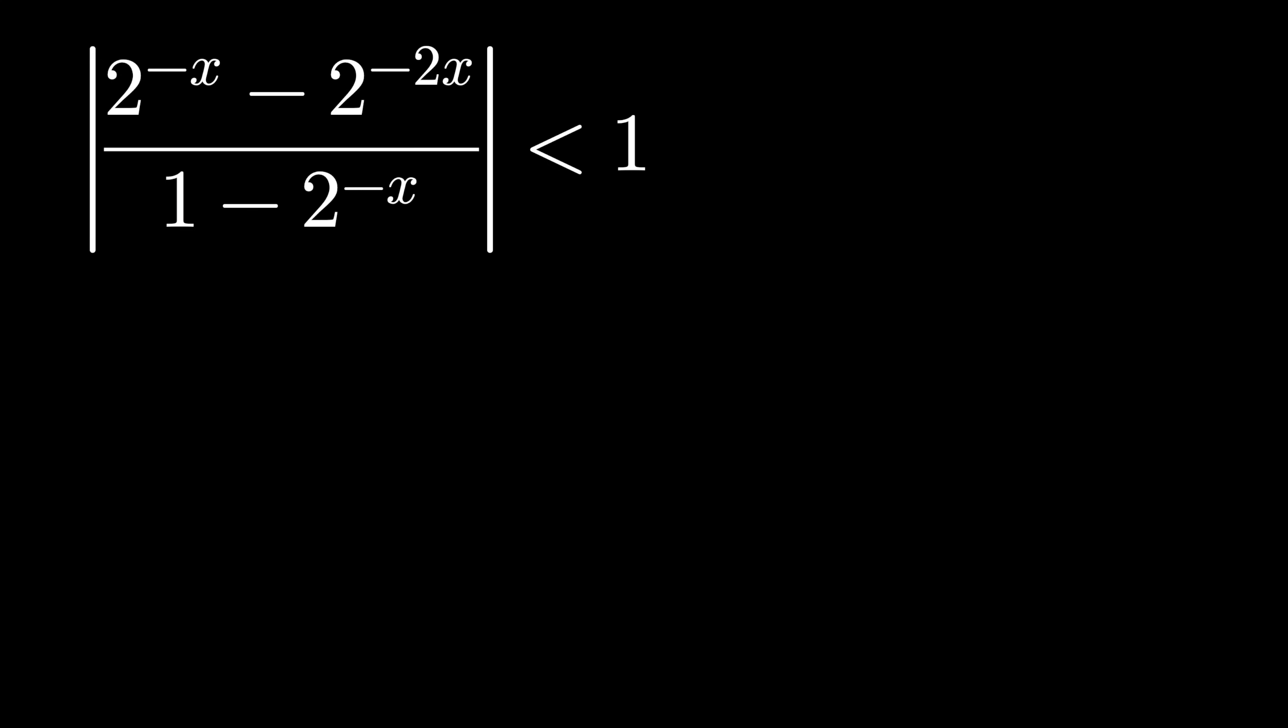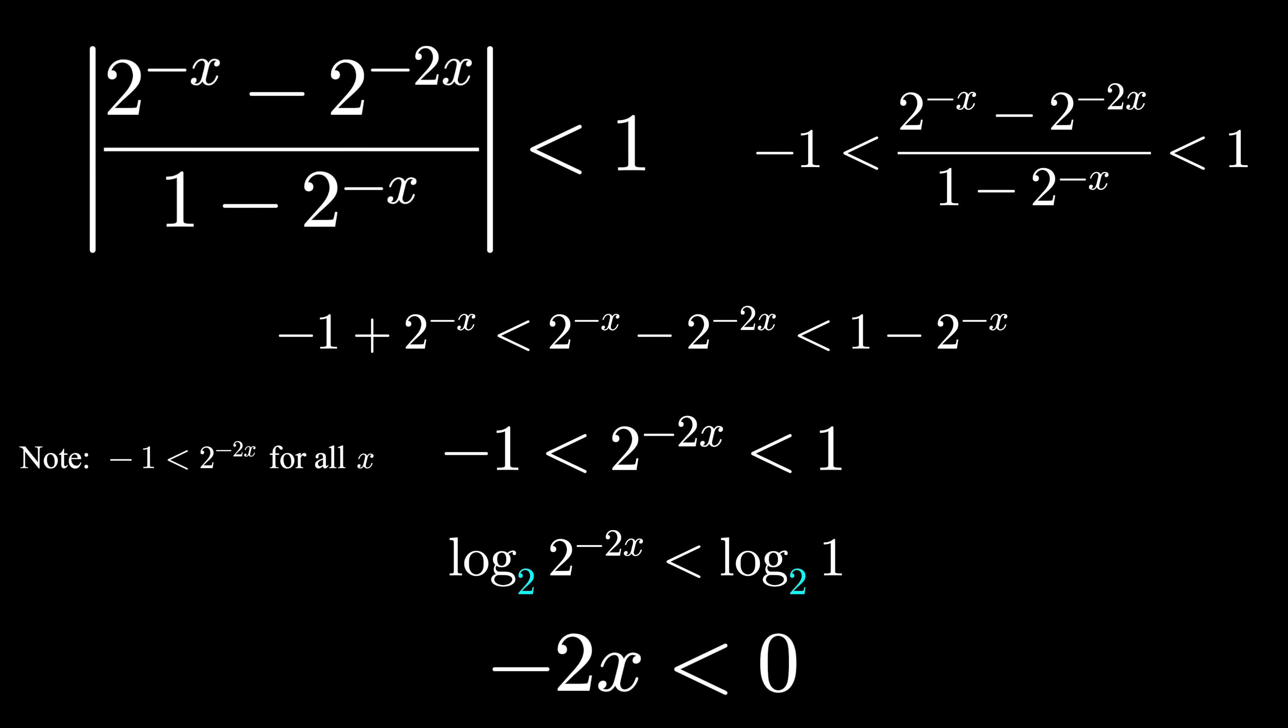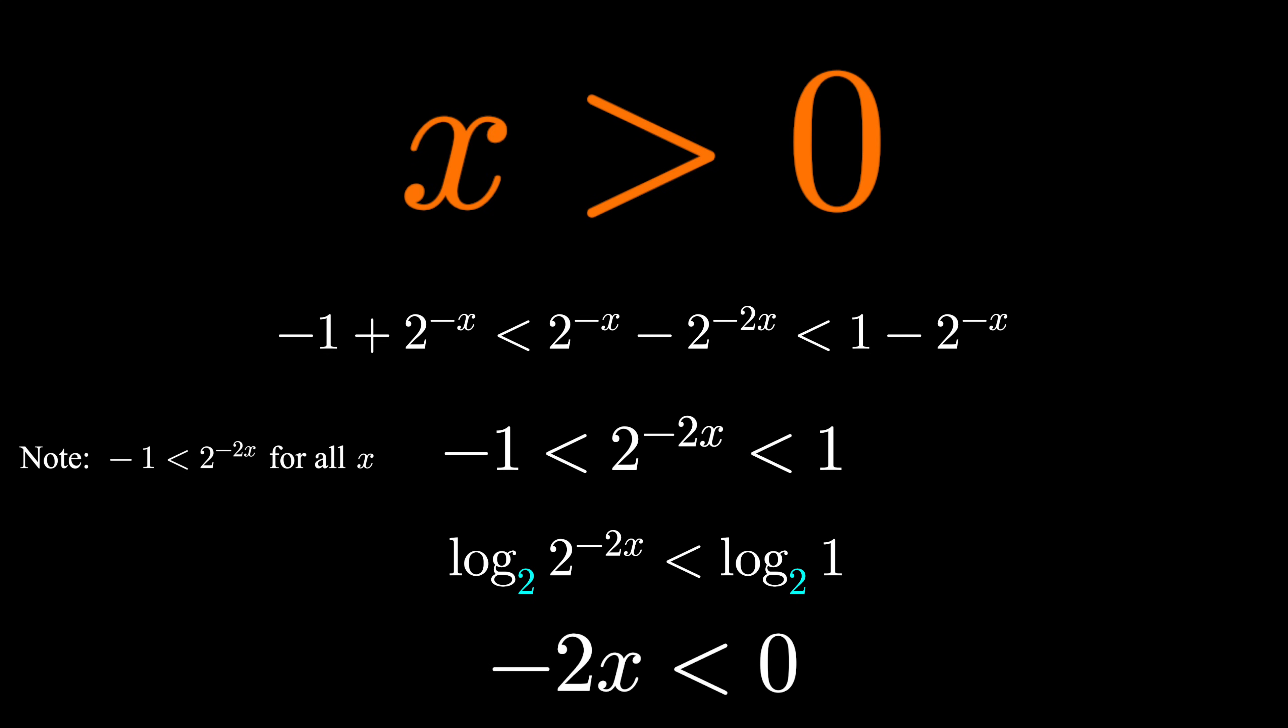Absolute value less than one means the same thing as this quantity is between minus one and one, and at this point it comes down to your inequality solving skills. Shuffle things around, cancel some things out, and maybe use a logarithm, and we'll see that our sum converges absolutely so long as x is greater than zero. And so maybe we can finally spot the problem as to why our sum switching wasn't giving us the right answer.